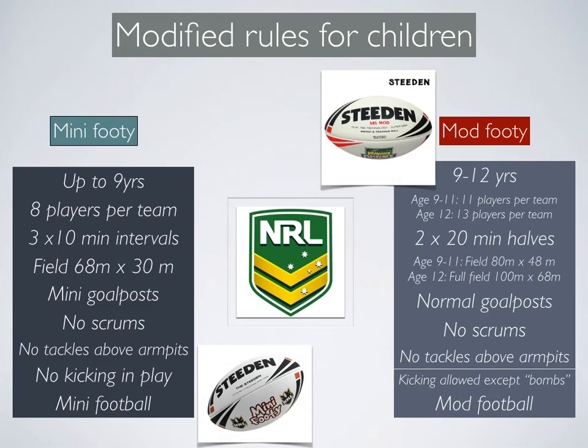Similarly, Rugby League has two modified versions: Mini Footy for those younger than nine and Mod Footy for those between nine and twelve. Again, smaller fields, shorter intervals, smaller goal posts, changes to rules such as no scrums ensure that young players can engage and have fun and still be safe. It's important for Rugby League to have these types of modified rules because it is a contact sport and young children need to be kept safe when they are playing.